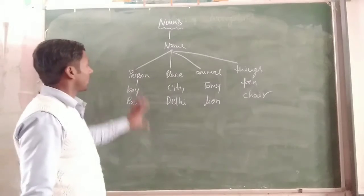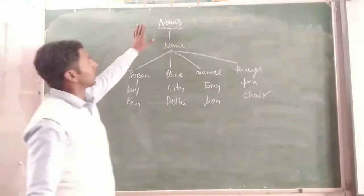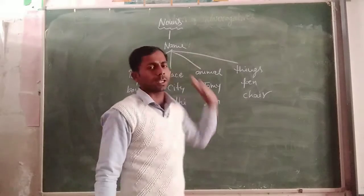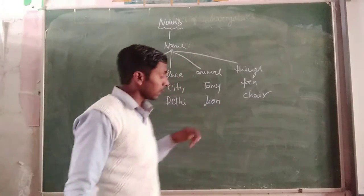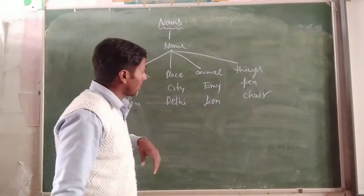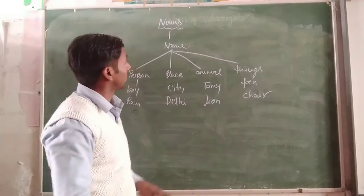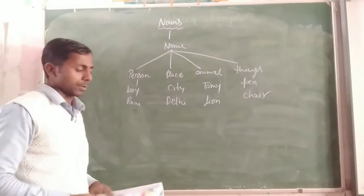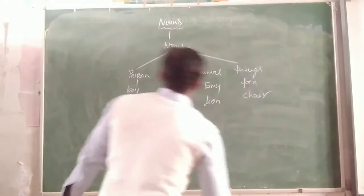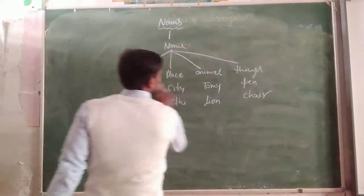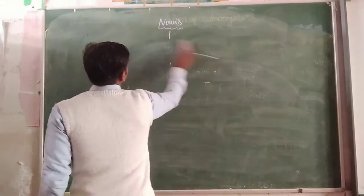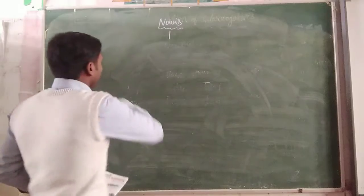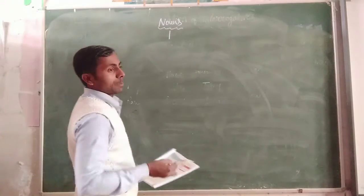So that is the definition of the noun: a noun is the name of a person, place, animal, or thing. Next we know about the kinds of nouns — that means the types of nouns.